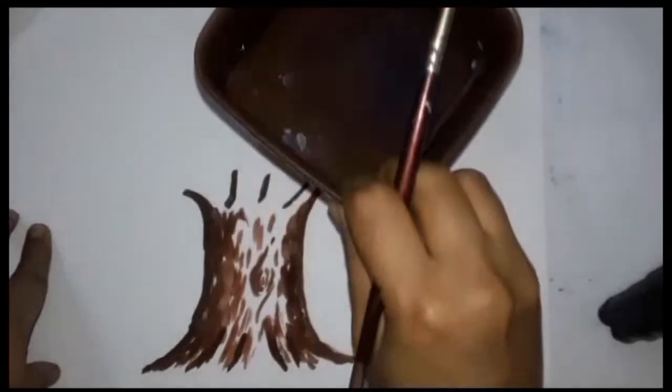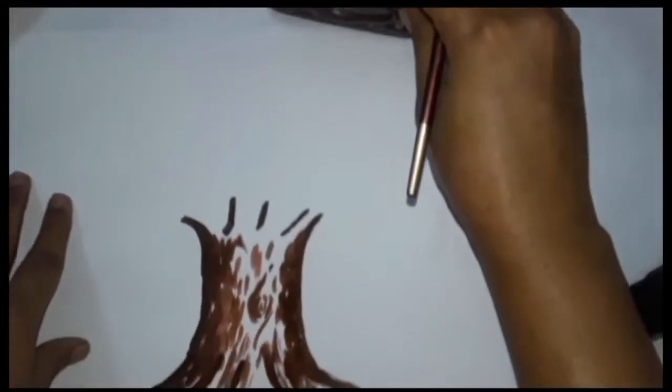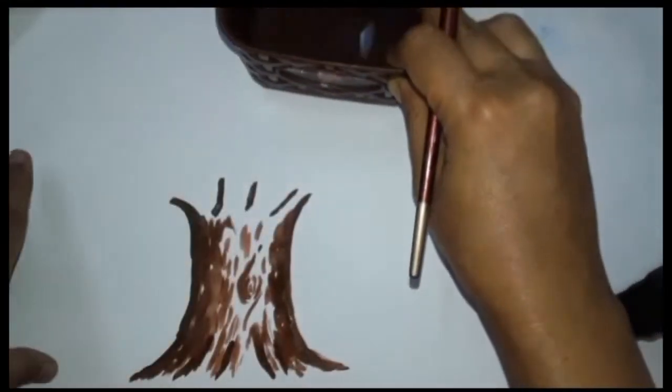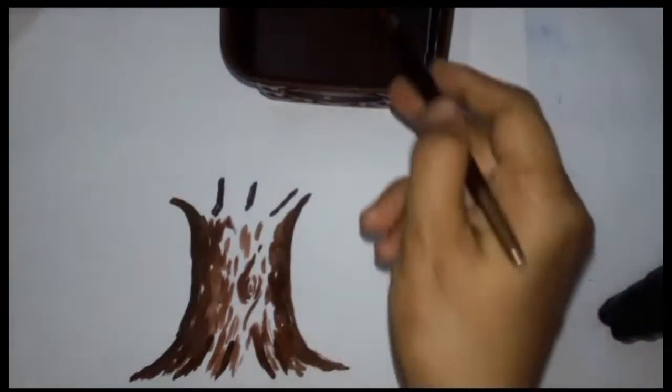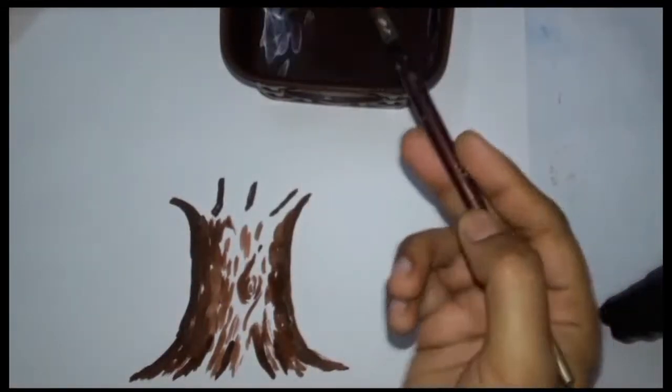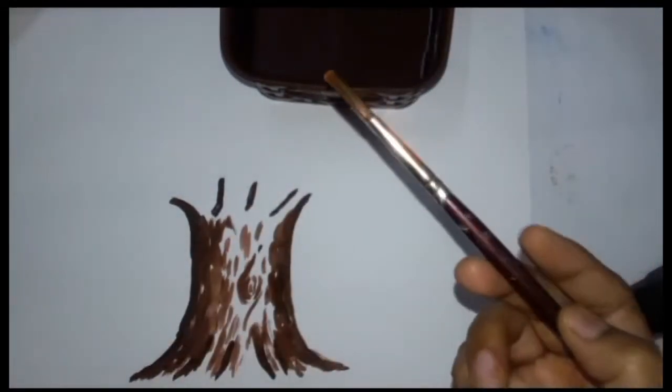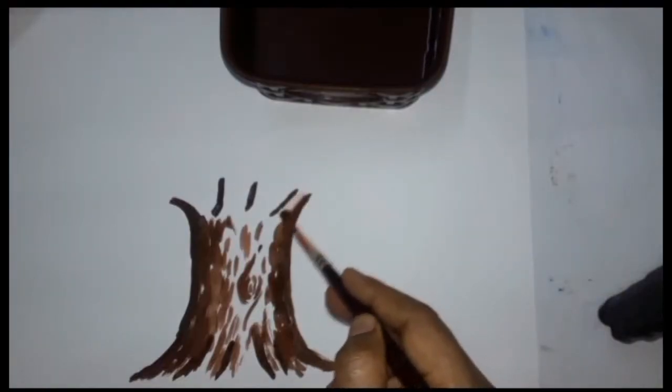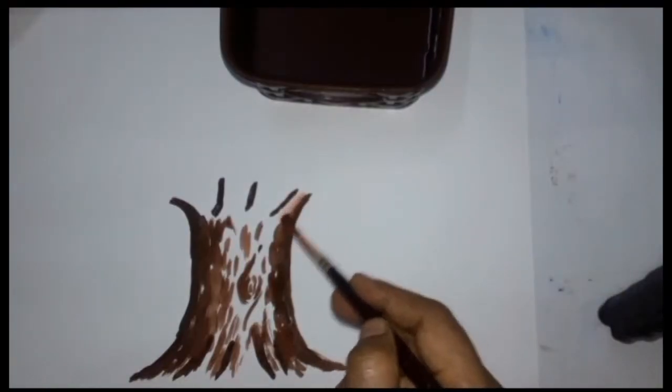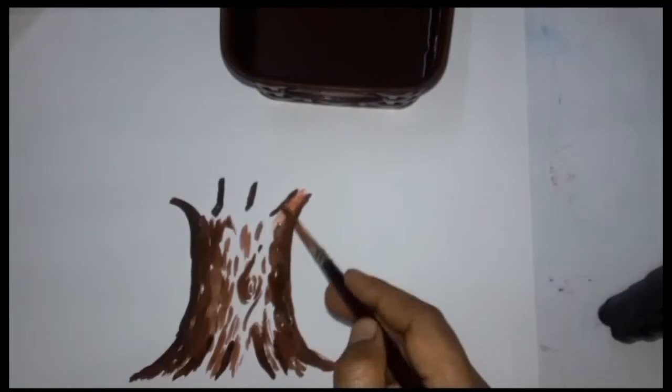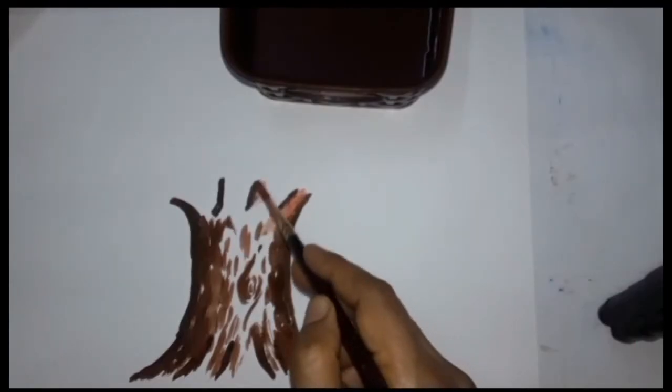Now I have taken clean water in a bowl and we have to wash our brush in it. We have to dry the brush with the cotton cloth so that all the color comes out of it. And now we have to use only water by immersing our brush in water. I am using the same brush here.